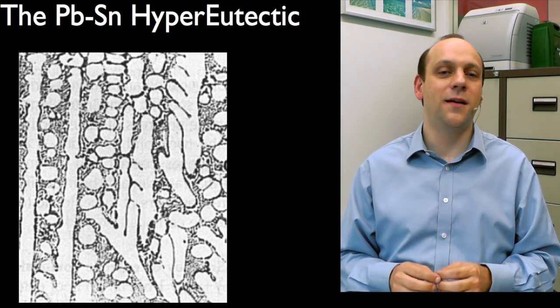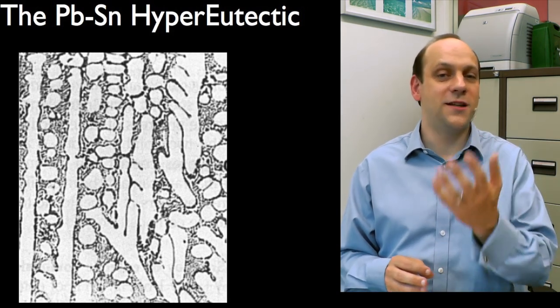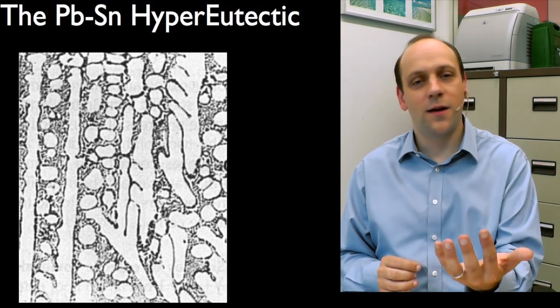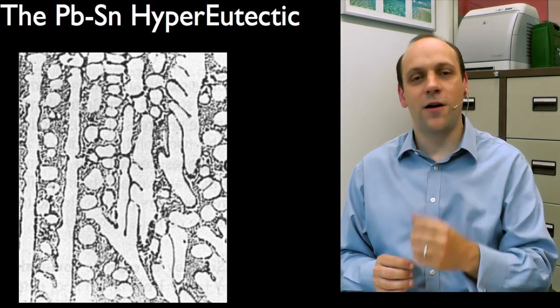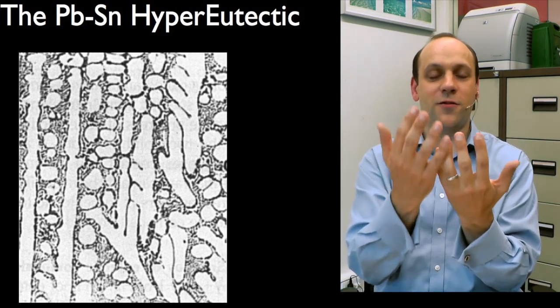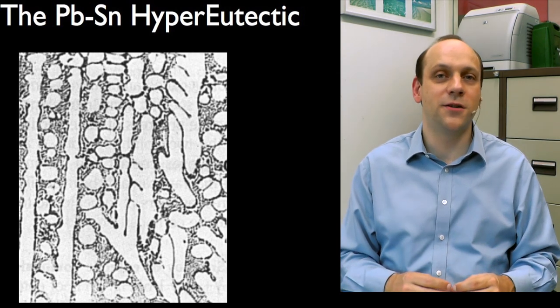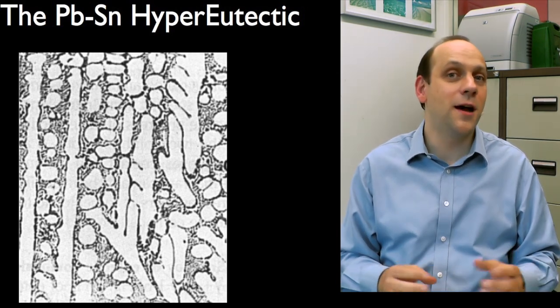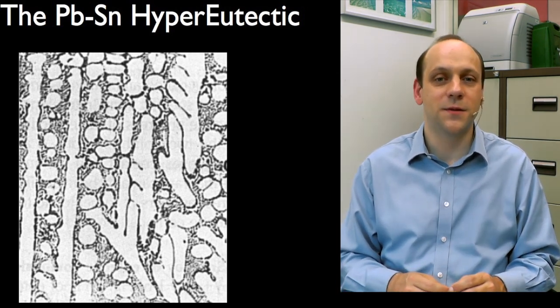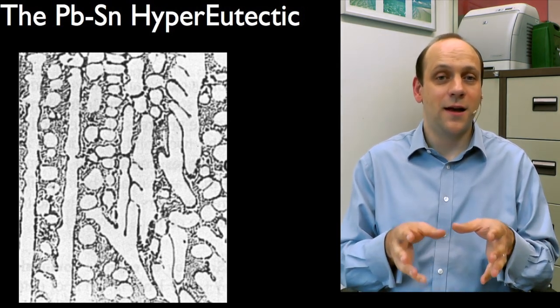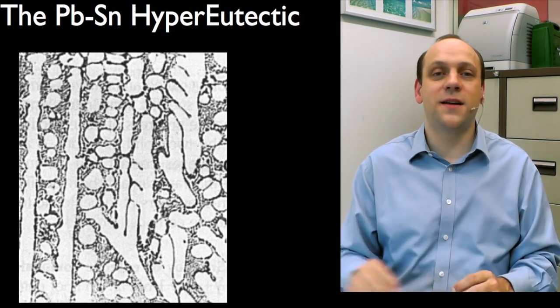And then what we're seeing is we're seeing dendrites of primary tin. So in this particular case, the tin has solidified as fingers growing up. They're called dendrites because they look like trees, called dendritic growth. And that's very often how solidification occurs. And you'll see that when you do some zinc-casting experiments. And in between, it's a hyper-eutectic amorous. So we've got some primary tin. And in between, we've got our eutectic.